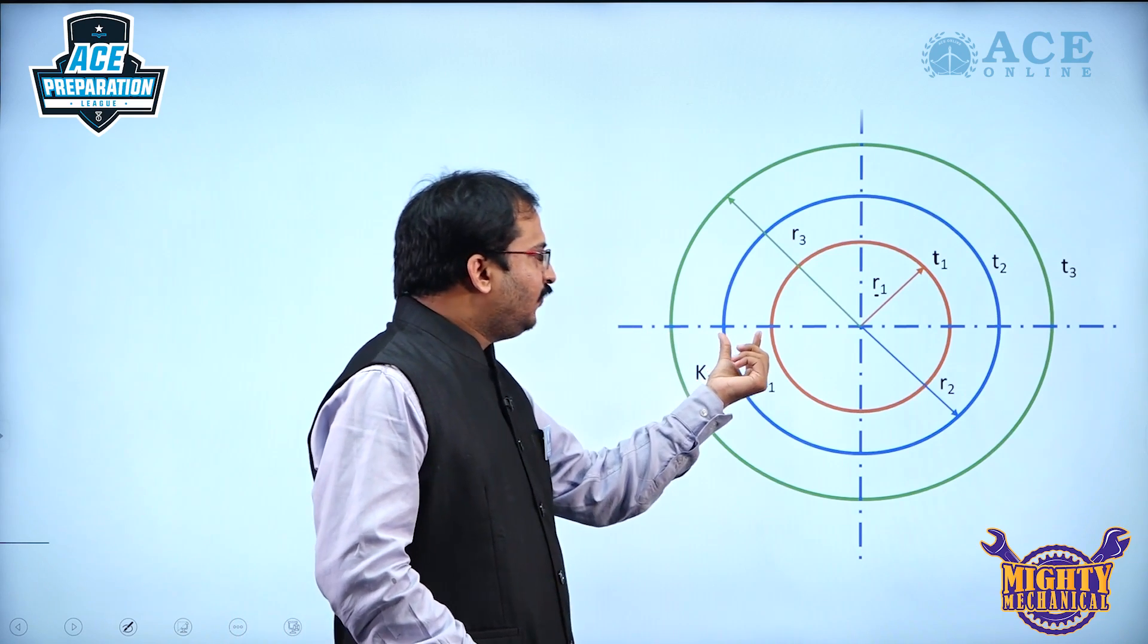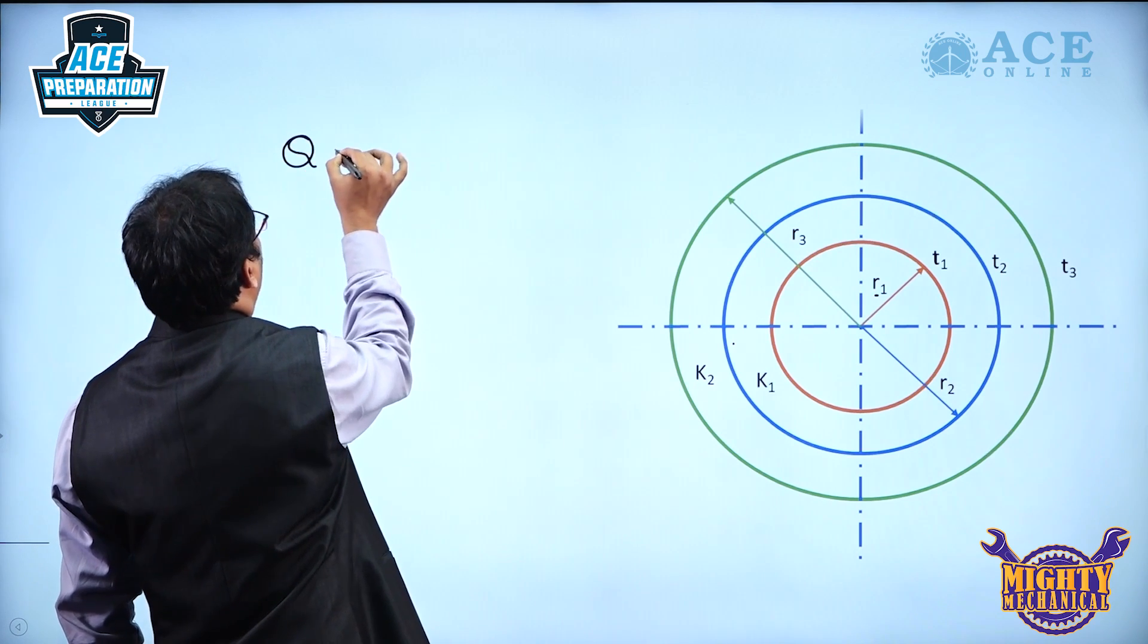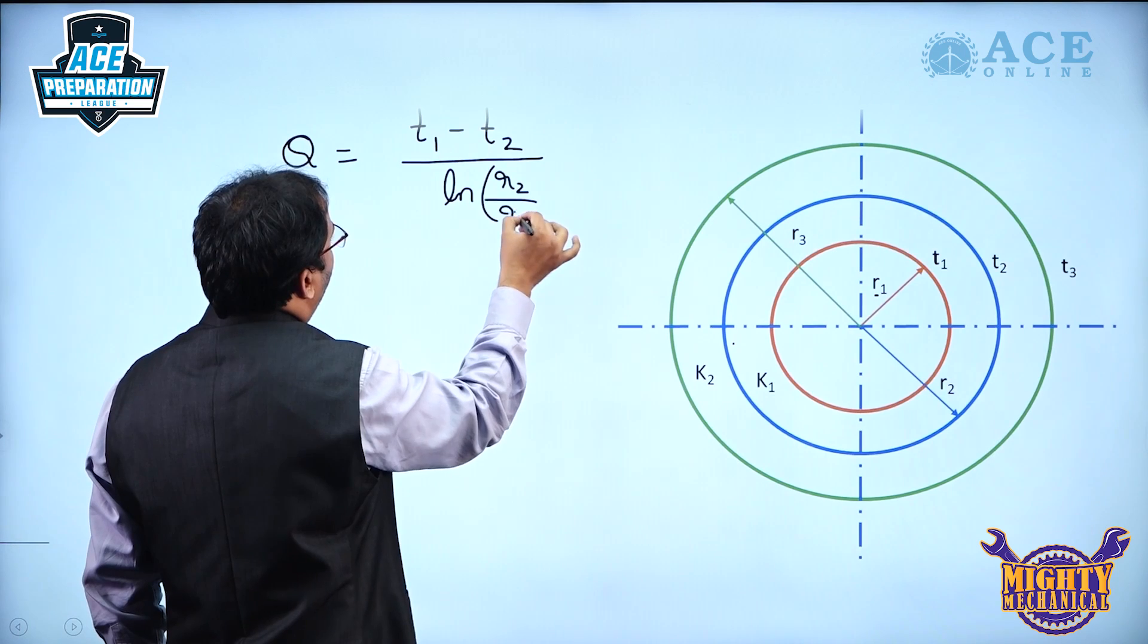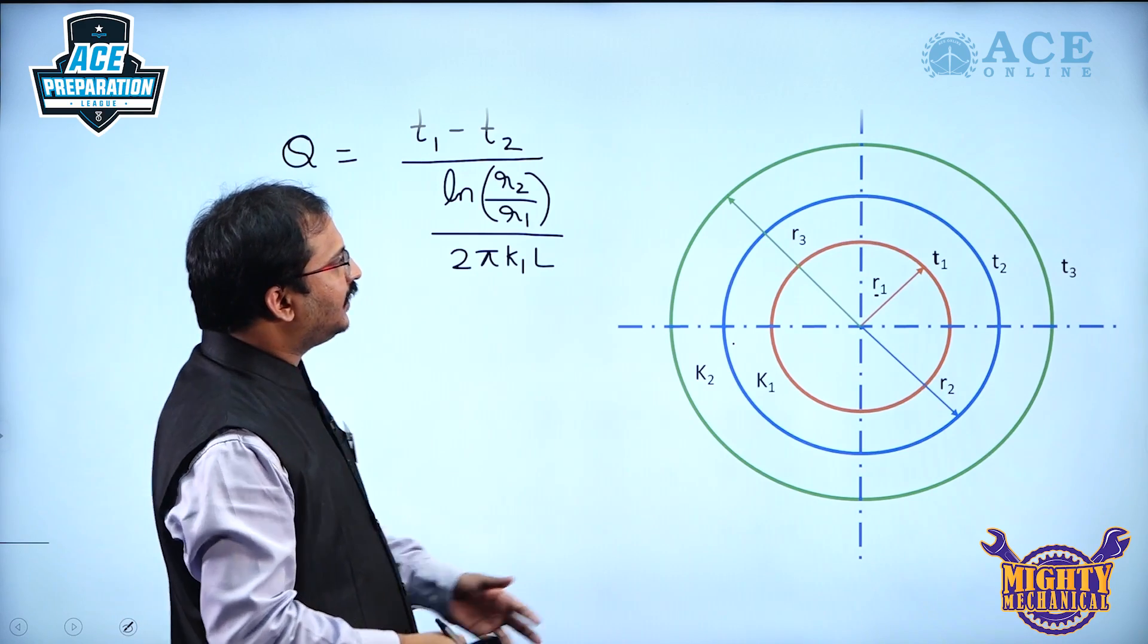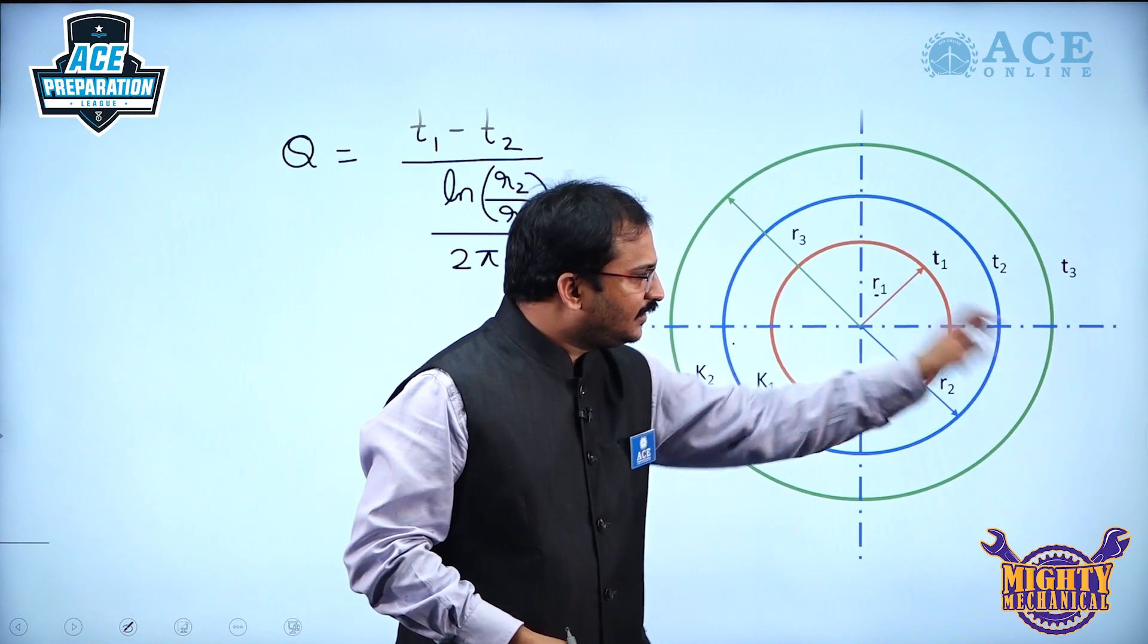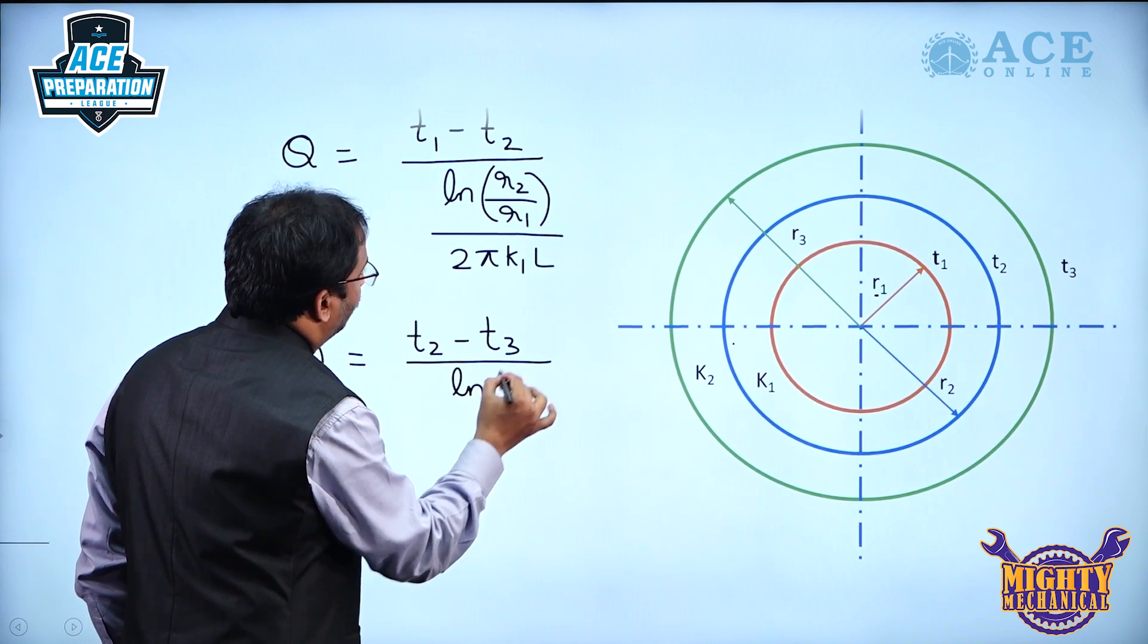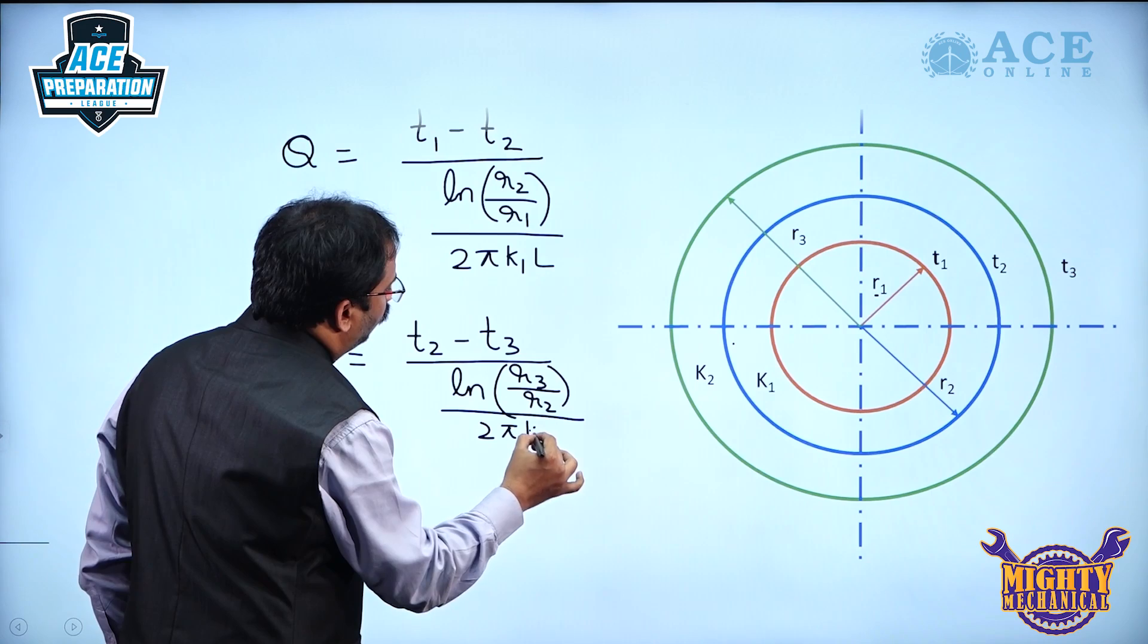Now, if we consider this particular part, the heat transferred Q will be equal to T1 minus T2 divided by ln(R2/R1) by 2πK1L. This is the heat transferred in the first portion, whereas the heat transferred in the second one is Q equals T2 minus T3 by ln(R3/R2) by 2πK2L.